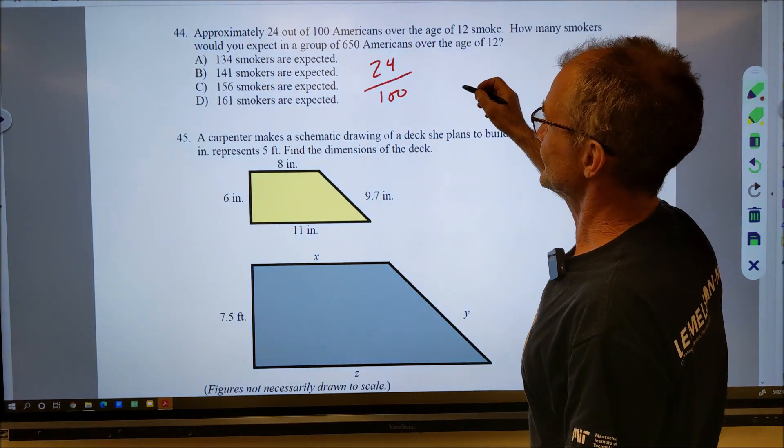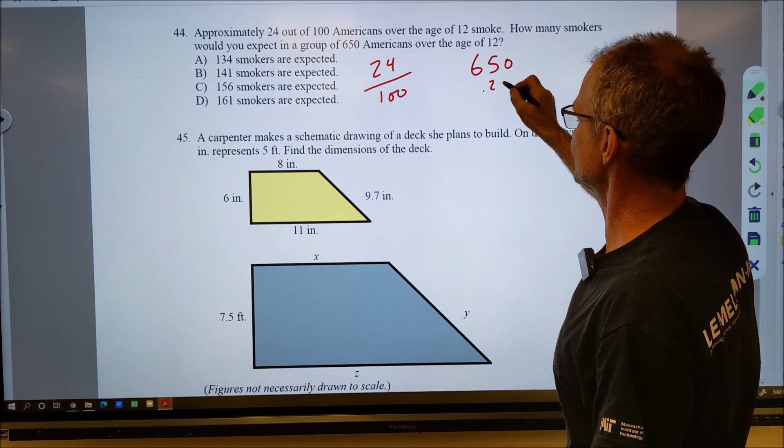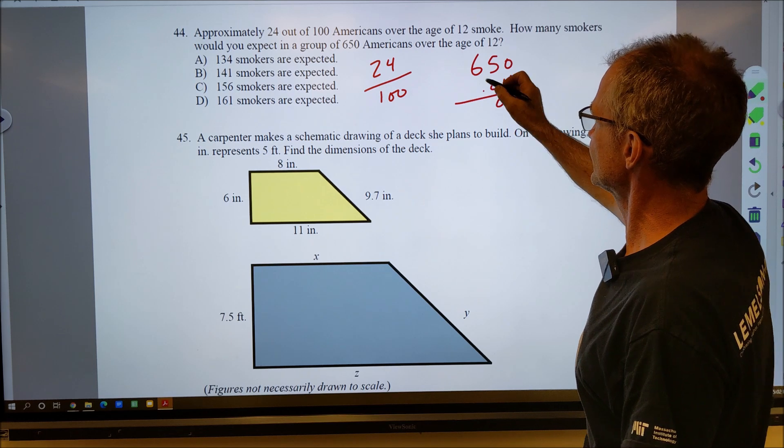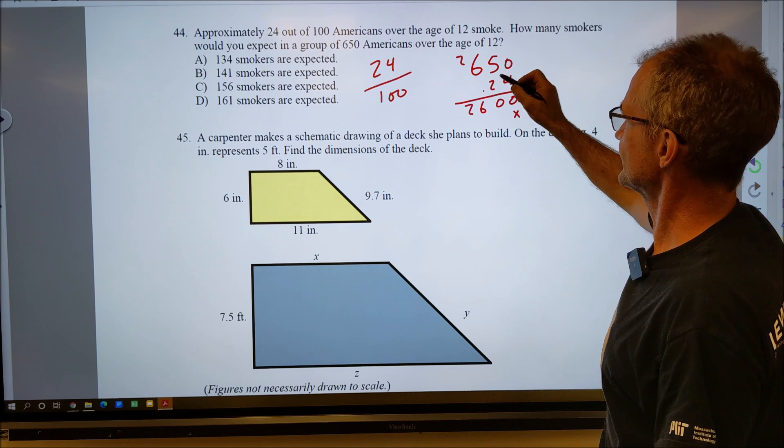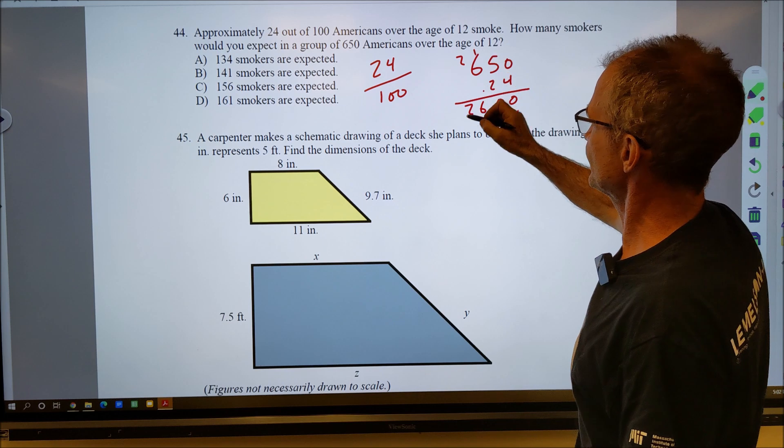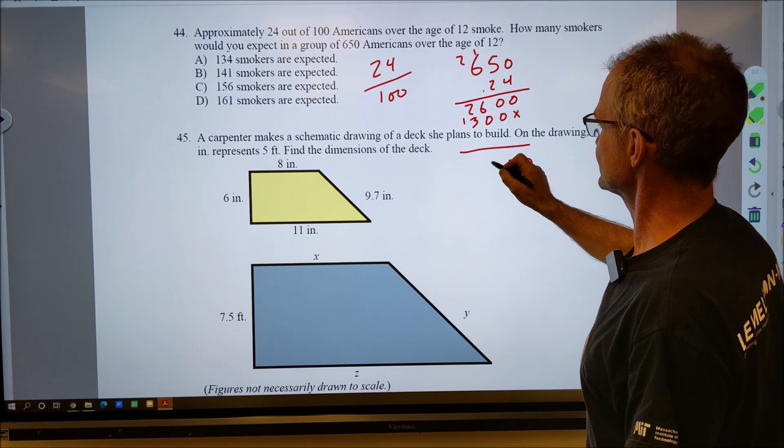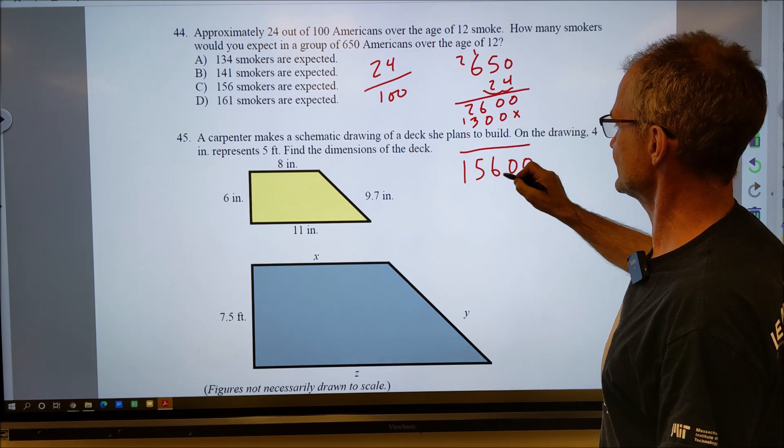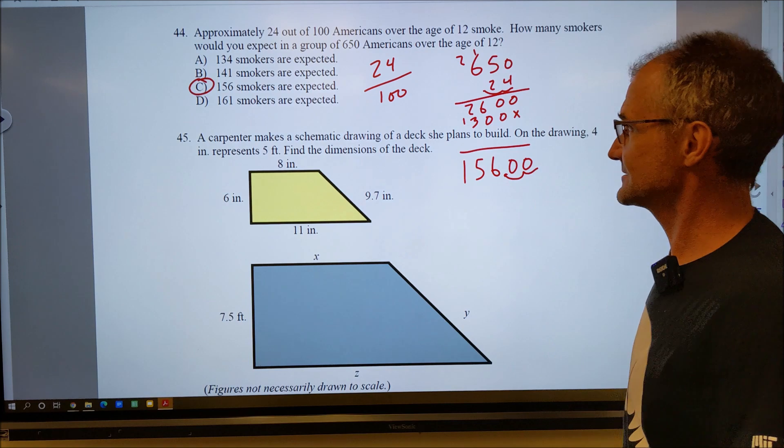So I'm going to do 650 times the decimal equivalent of that, 0.24. 4 times 0, 4 times 5, 20, carry the 2, 24, 26. Placeholder. 2 times 0, 2 times 5, 10, carry the 1, 12, 13. Going to add that up to get 0, 0, 6, 5, 1, 1, 2 decimal places, 1, 2 decimal places. So 156. There's the answer right there, answer C.